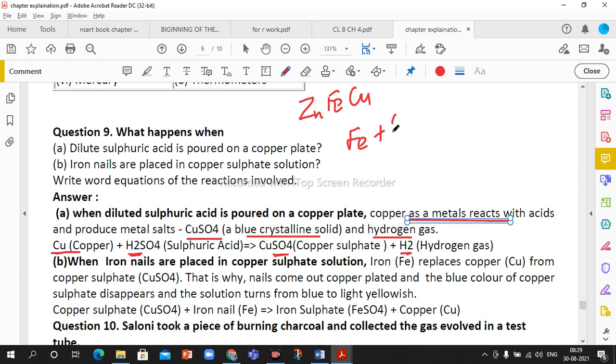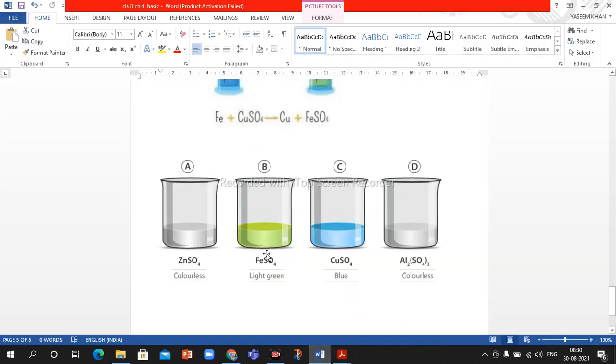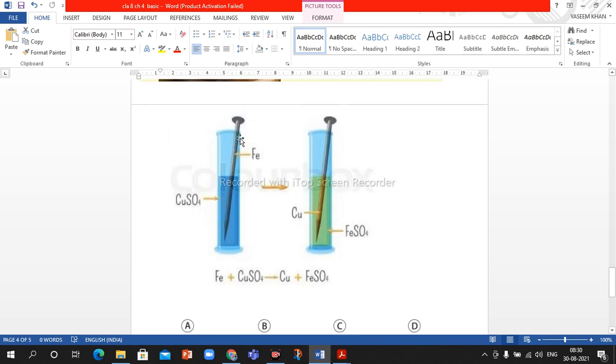Iron nail placed in copper sulfate solution. This is a displacement reaction. Iron sulfate will form, which is pale green color, and copper metal will be deposited. Copper sulfate is blue color solution. This reaction forms iron sulfate which is pale green color. When we dip iron nail in copper sulfate, then it forms iron sulfate which is pale green color.